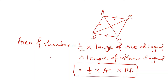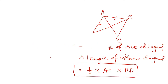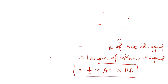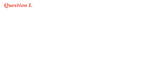That is: half into diagonal one into diagonal two. Now we will see some questions based on rhombus area. Question number one: the lengths of the diagonals of a rhombus are 15 centimeters and 24 centimeters. Find its area.